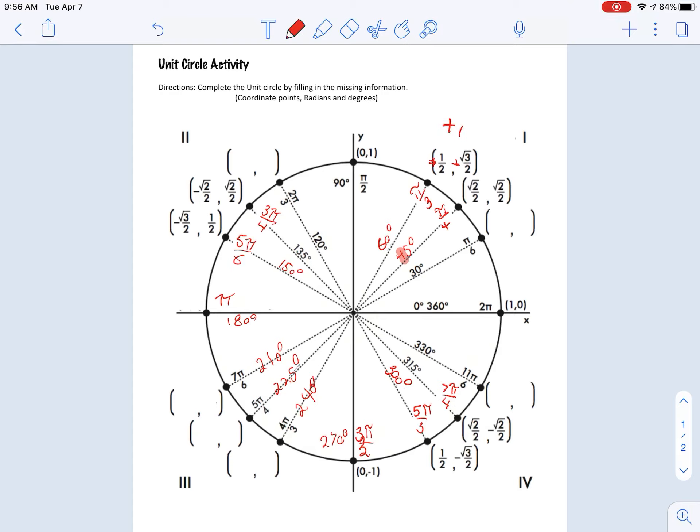So once again, this quadrant is going to be positive and positive. This quadrant is going to be negative and positive. This quadrant is going to be negative and negative. And this quadrant is going to be positive and then negative.